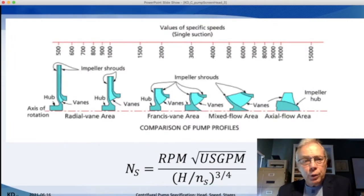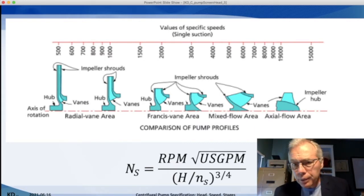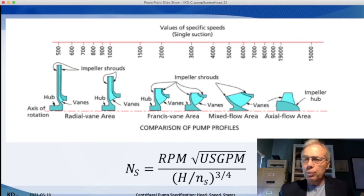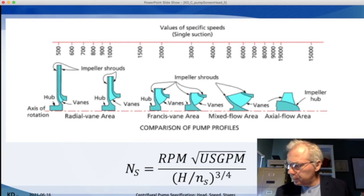Impellers come in all different shapes and sizes. Some are flat and fling the fluid radially outwards like a disc brake on a car, and some are very axial and push the fluid straight forward much like a boat propeller. The shape of the impeller is a key metric for pump performance.